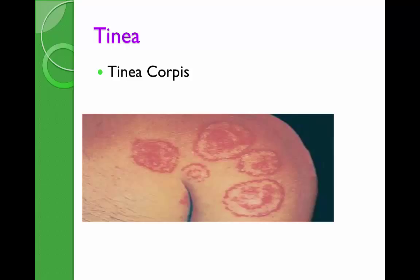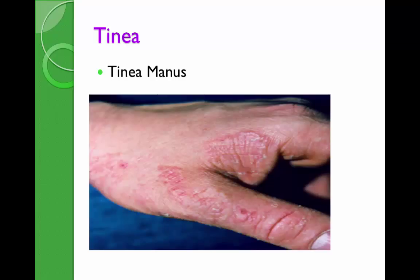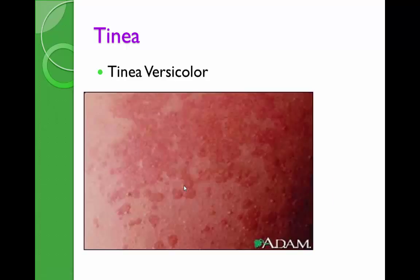If you scrape the borders, you will see scales. It is caused by Trichophyton rubrum or canis — it can be transmitted from animals to humans. Tinea manuum is the same — raised borders of the skin on the hand.